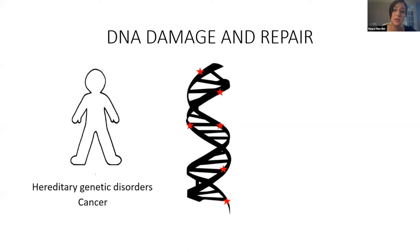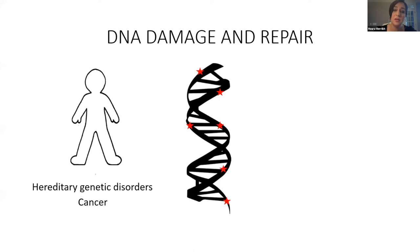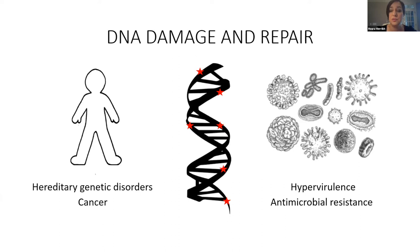If the cell fails to repair DNA damage, there are a lot of really bad consequences. In people, there are a number of consequences — generally, terrible outcomes of a failure to repair, including many hereditary genetic disorders and, of course, cancer. But this is not specific to humans; it's true for all species across many different phyla, including microorganisms, which is where much of what we know started. The consequences of failure to repair and ultimate mutagenesis can lead to hypervirulence in pathogens and antimicrobial resistance in bacteria.